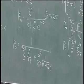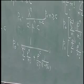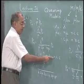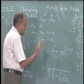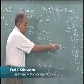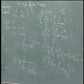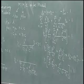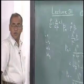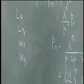Having derived P0, Pn can be written as rho power n by n factorial times P0 when n is less than C, and rho power n by C factorial times C to the power n minus C times P0 when n is greater than or equal to C. Once we know P0 and the general expressions for Pn, the next step is to calculate Ls, Lq, Ws and Wq using these expressions. The computation of Ls, Lq, Ws and Wq will be addressed in the next lecture.